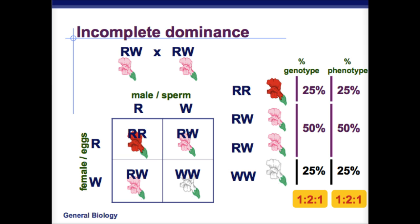For the Punnett square of incomplete dominance, for the second generation you would have big R and big W across the top and side. That gives you big R big R for your 25% red, two big R big W's for 50% pink, and then W W for 25% white, giving you that 1 to 2 to 1 ratio.